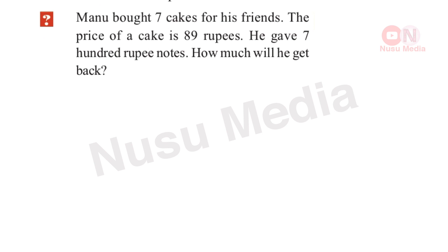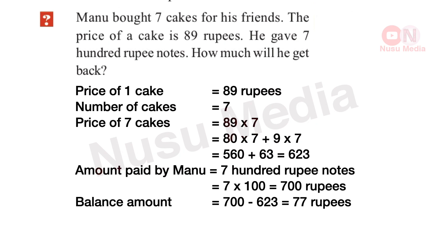Manu bought 7 cakes for his friends. The price of one cake is 89 rupees. He gave 700 rupees. How much will he get back? The price of 7 cakes is equal to 89 into 7, which is 623 rupees.